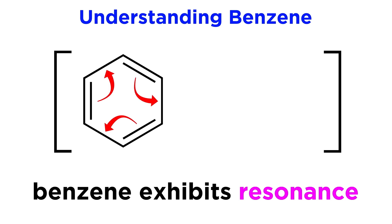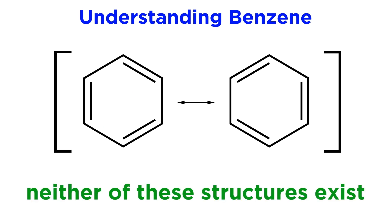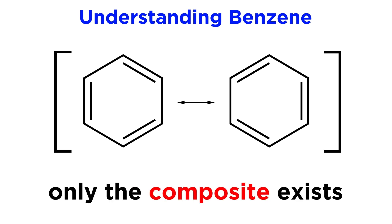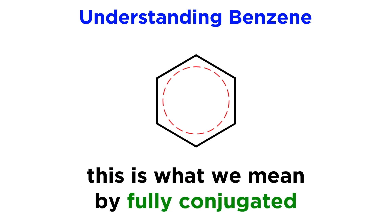We have this one here, but we can also push each pi bond over by one position, which will produce this other resonance structure. Now remember that discrete resonance structures don't exist, only the composite resonance structure, and that will involve pi electron density being fully delocalized and distributed evenly all around this ring. It's almost like half a pi bond in between each pair of carbons, making this perfectly symmetrical. This is represented by the dashed line going all the way around the ring, and this is what we meant by fully conjugated. There is no disruption of this pi electron density — it is present everywhere in the ring.